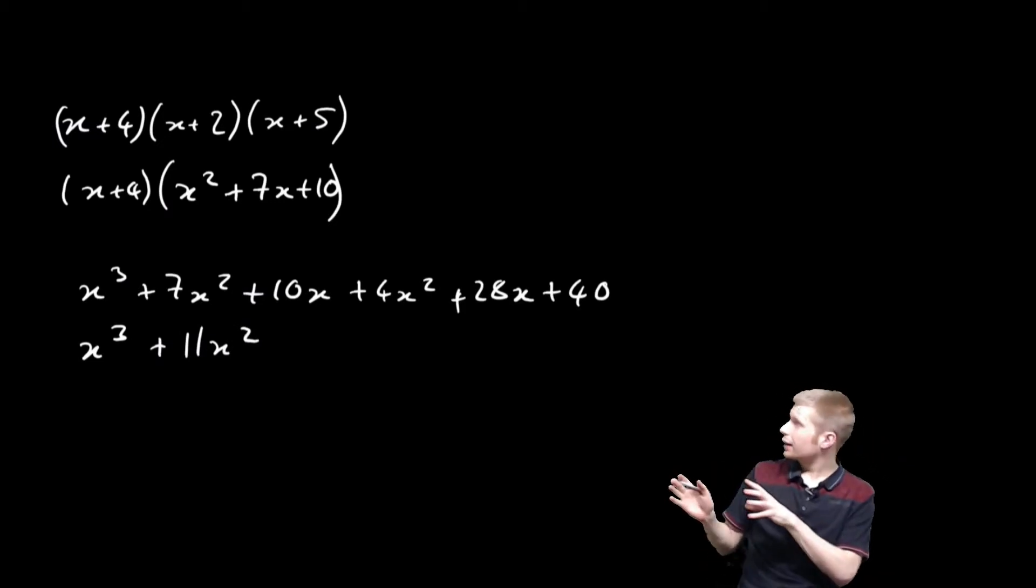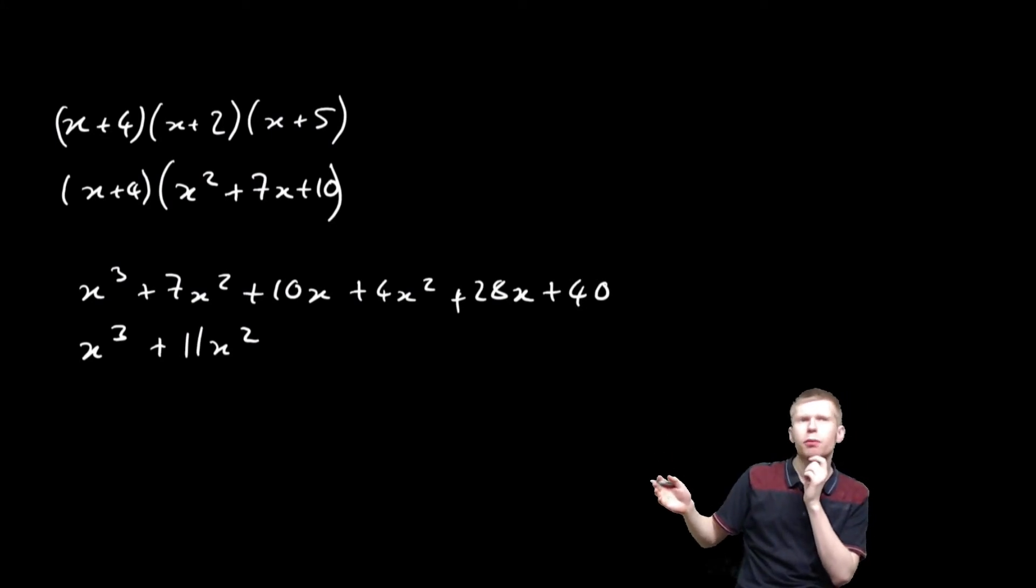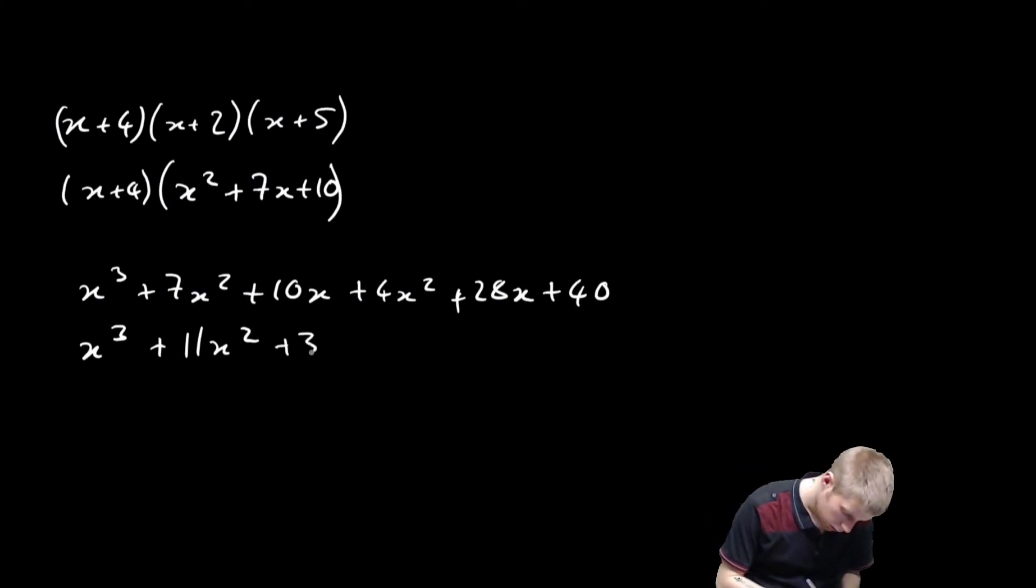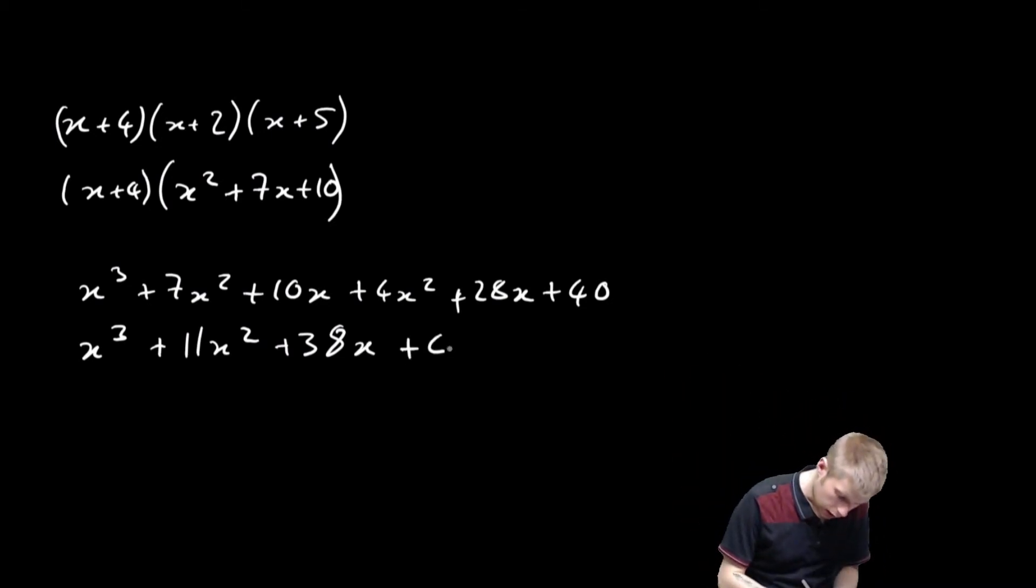Then I'm going to work with my x's. So I've got 10x and I've got 28x. So therefore I'm going to have 38x. And then the 40 is just sitting there on the end, just like that.